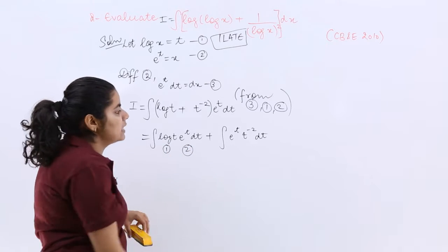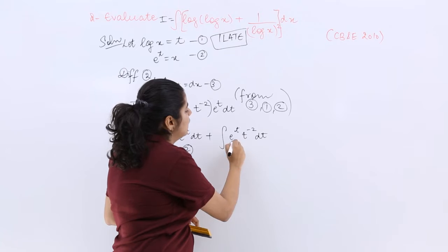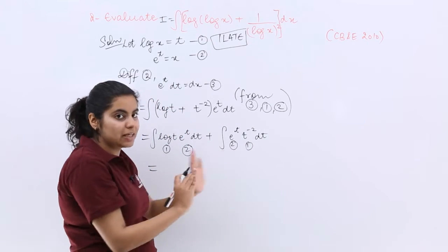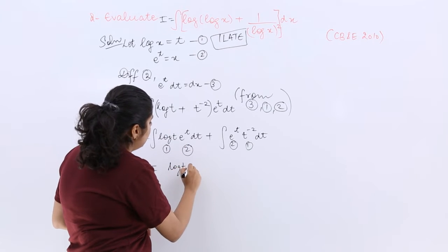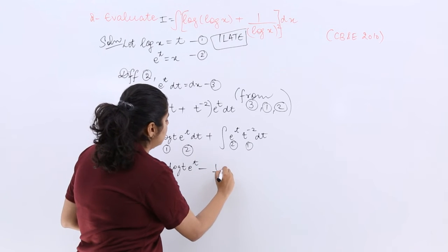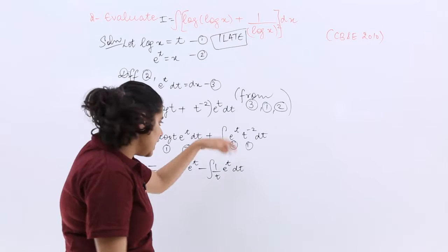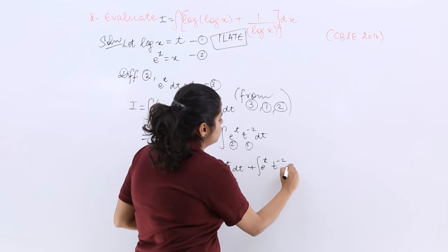Wherein logarithmic should be treated as the first wherever it is. So this should be your second. And out of exponential and other things exponential is always the last. So this should be the first. Now after this step we have first function and second functions defined. So first function into integration of second minus differentiation of first into integration of second whole integration and the other let's copy as it is e raised to the power t times t raised to the power minus 2 dt.